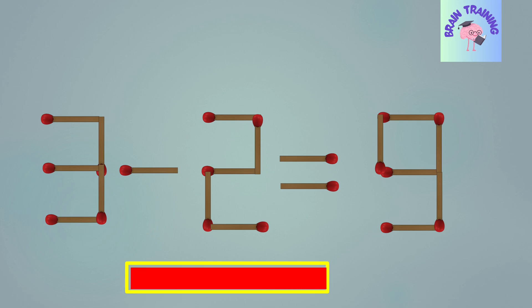And now for the answer. To correct the equation, take a matchstick from the number nine and move it to the minus sign, changing it to a plus sign. This gives you three plus two equals five. Perfect!